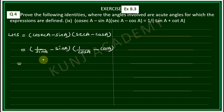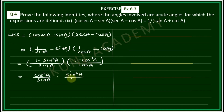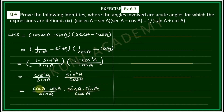So we get (1/sinA - sinA)(1/cosA - cosA) = (1 - sin²A)/sinA × (1 - cos²A)/cosA. Now 1 - sin²A = cos²A and 1 - cos²A = sin²A. So we have cos²A/sinA × sin²A/cosA. Writing cos²A = cosA·cosA and sin²A = sinA·sinA, cosA cancels from numerator and denominator, sinA cancels, leaving cosA·sinA.